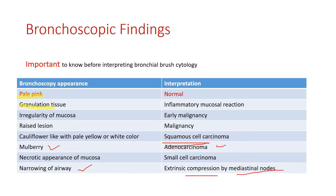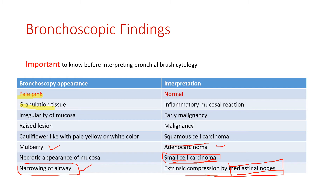Narrowing of the airway seen while proceeding with the scope is suggestive of compression by mediastinal nodes. A necrotic appearance of the mucosa is characteristic of small cell carcinoma. Granulation tissue represents an inflammatory mucosal lesion.